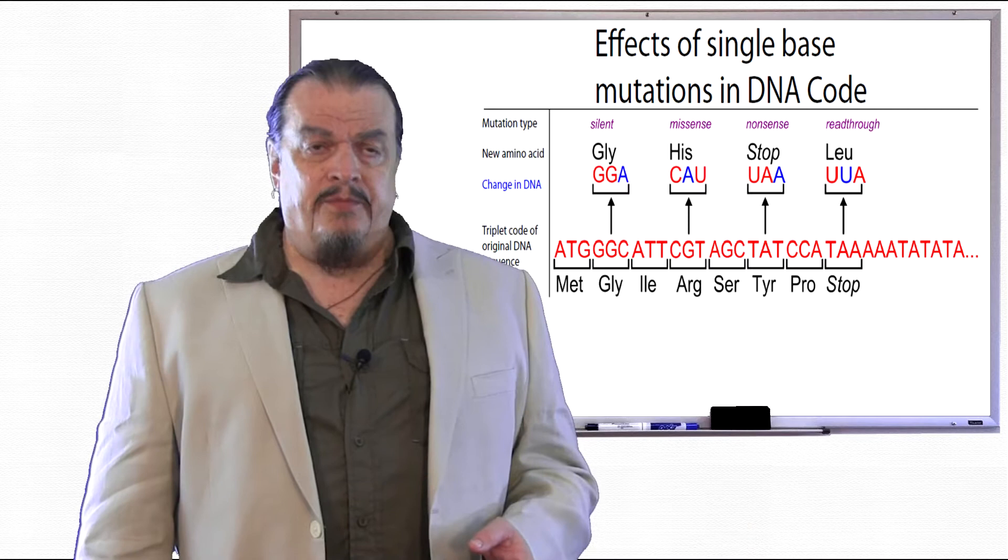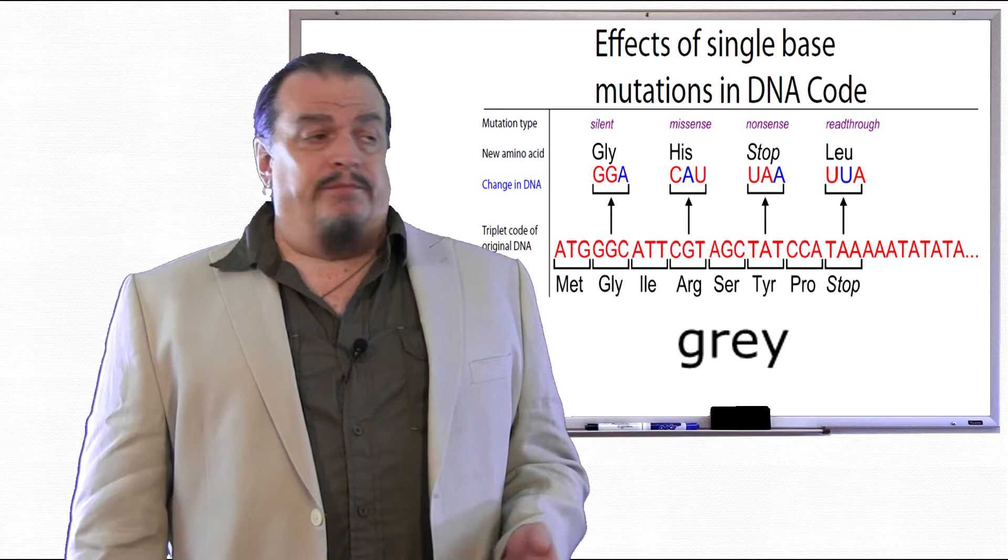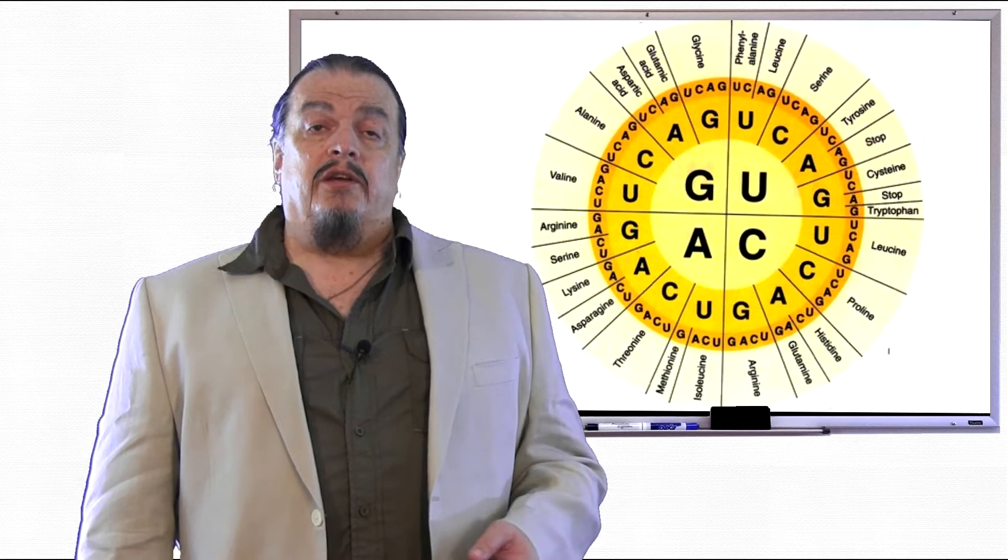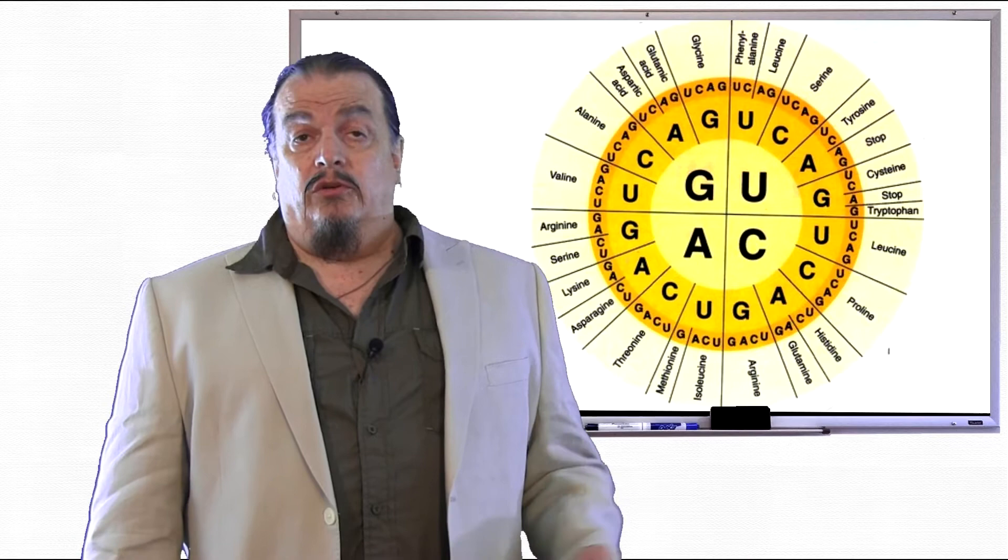For example, if you substitute the letter A in gray with an E, you'll get grey, which doesn't change the meaning of the word. It can be spelled either way. On your codon chart, glycine can be made using the codons GGA and GGC, like we just learned, or with GGU or GGG.